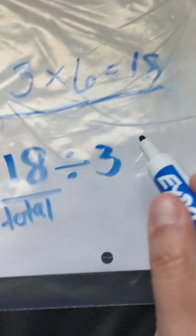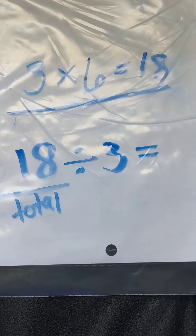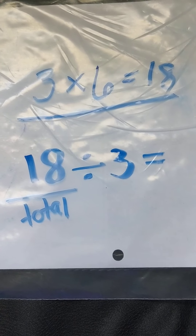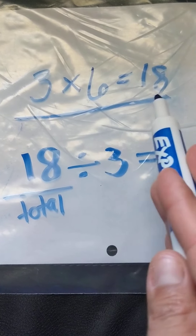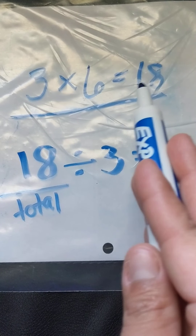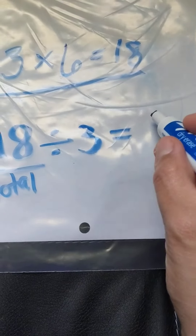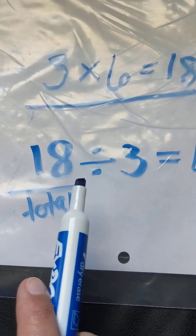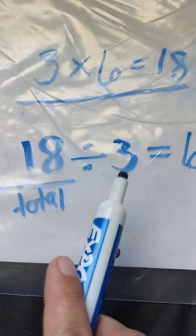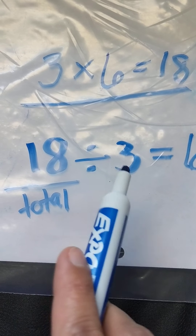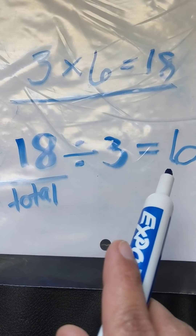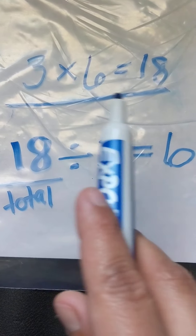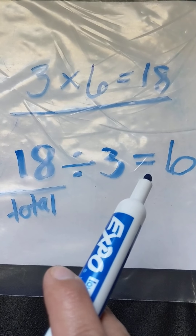My answer is going to be how many I have inside each group or inside each row, which is the only number I have not used in my equation from up above — six. So if I take 18 and divide it into three groups, then each group will have six. This is our fact family equation.